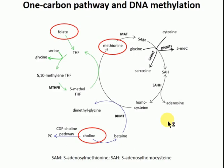SAH — S-adenosylhomocysteine — has a higher affinity for DNA methyltransferases than SAM does, which is unusual. So SAH has to be removed from the site of production quite fast. If it doesn't get removed, it stays bound to the DNA methyltransferase and inhibits DNA methylation. It's key for SAH to get converted to homocysteine and be removed so the cycle can continue.